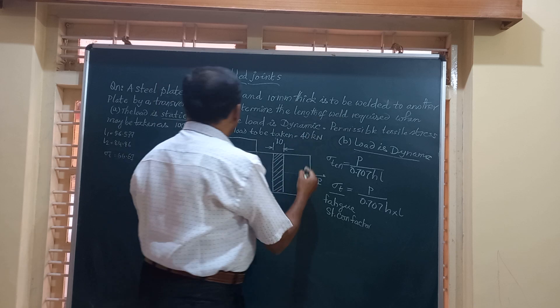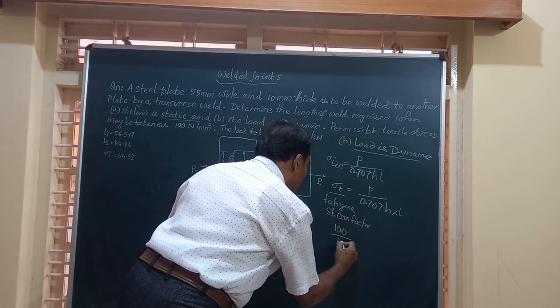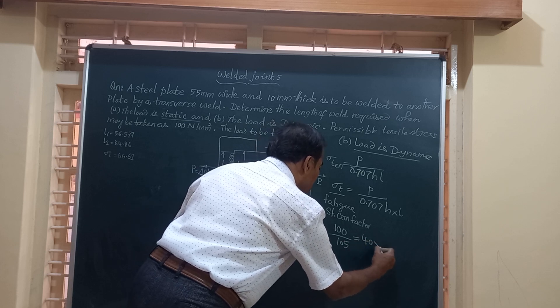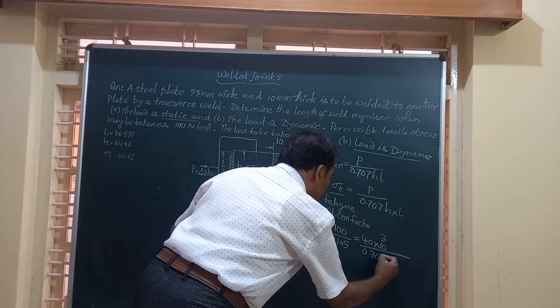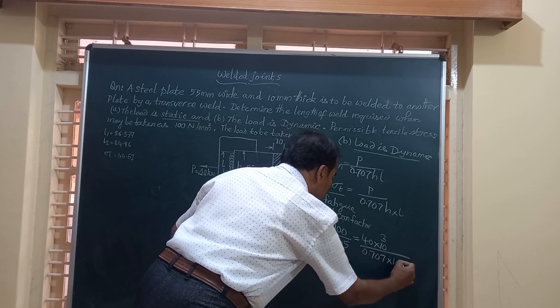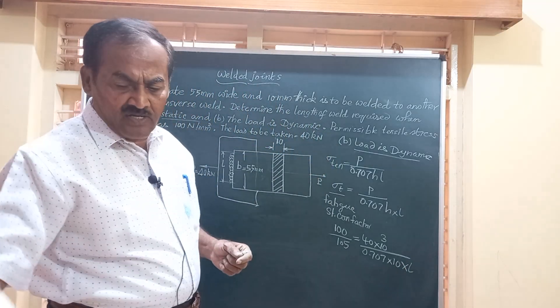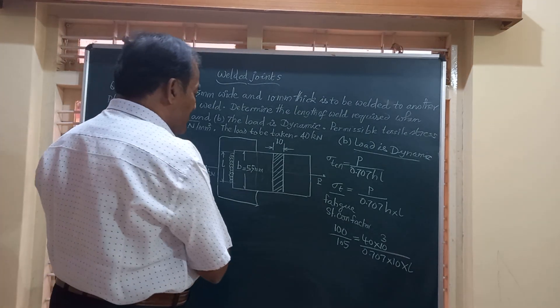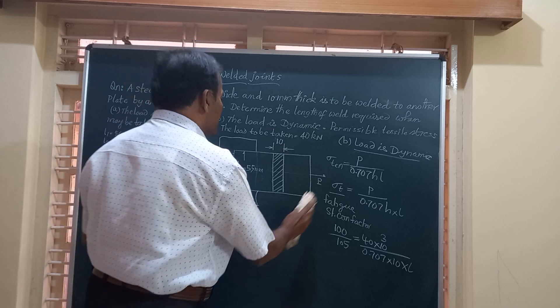Sigma tensile is given to be 100 divided by 1.5, the factor, is equal to P is 40 into 10 to the power of 3 Newton, divided by 0.707, H is 10, L is the length of the weld required. And after simplification, friends, this value of L also 84.86 millimeter.